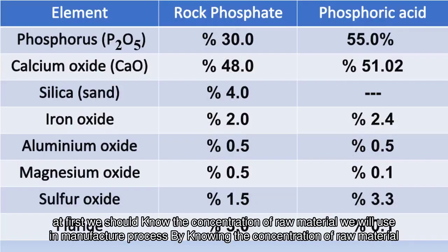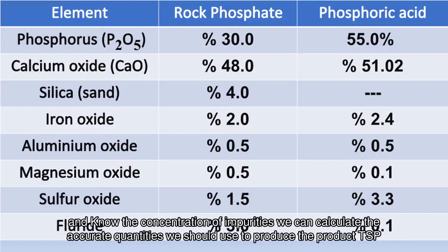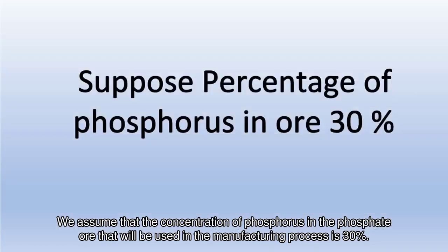First, we should know the concentration of raw material we will use in the manufacturing process. By knowing the concentration of raw material and the concentration of impurities, we can calculate the accurate quantities needed to produce the product TSP. We assume that the concentration of phosphorus in the phosphate ore used in the manufacturing process is 30%.